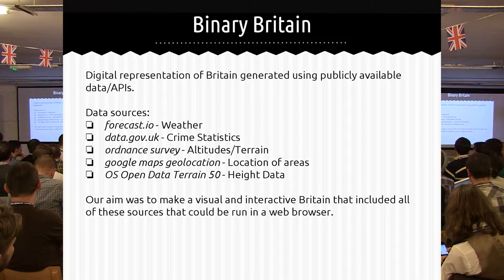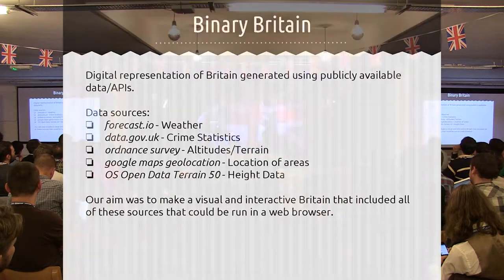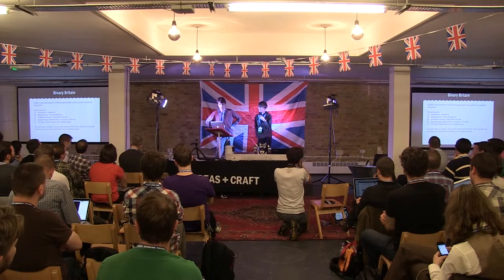These are the bits of data we're using. In the prototype we're using Forecast.io to get weather information for real-time weather stats depending on where you were. So if you were on Snowdon then it might be raining, which would be reflected in your world. Then we had crime statistics, so bandits would appear depending on the crime stats of that area. And in the new one it's in 3D, so we've got altitudes and geolocation.